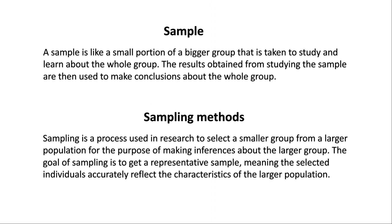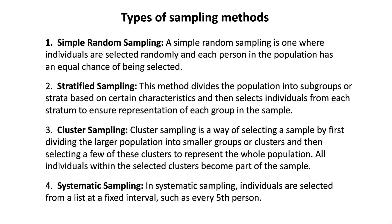Sampling is a process used in research to select a smaller group from a larger population for the purpose of making inferences about the larger group. The goal of sampling is to get a representative sample, meaning the selected individuals accurately reflect the characteristics of the larger population. Types of sampling methods: